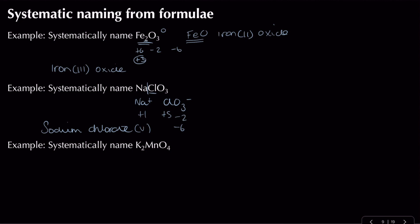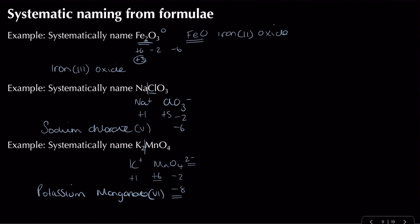For potassium manganate: potassium has a plus one oxidation state. With two potassiums, the manganate ion must be two minus overall. Oxygen is minus two, four oxygens gives minus eight. To get from minus eight to minus two, I need plus six — so the name is potassium manganate(VI).